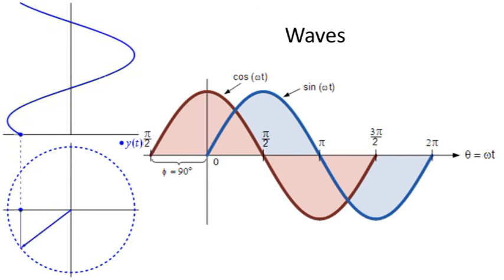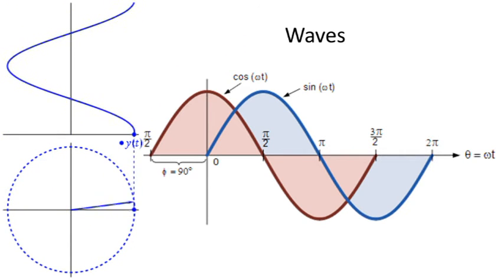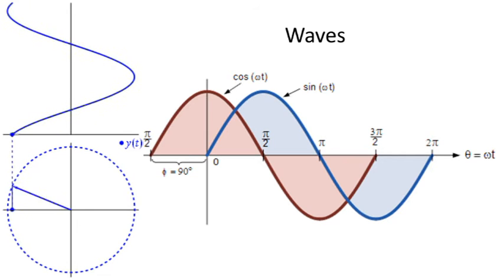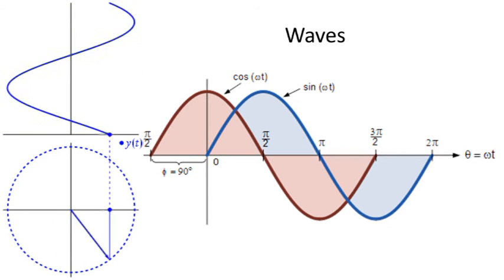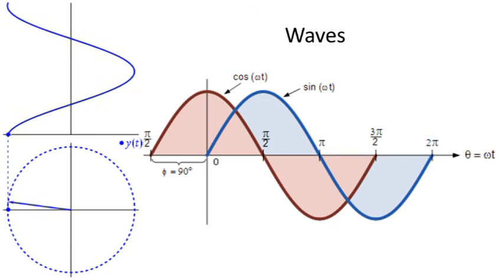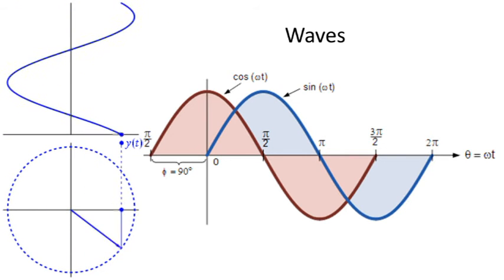The other thing we see is theta, the angle. It's given as omega t. T is time and omega is something called angular velocity.